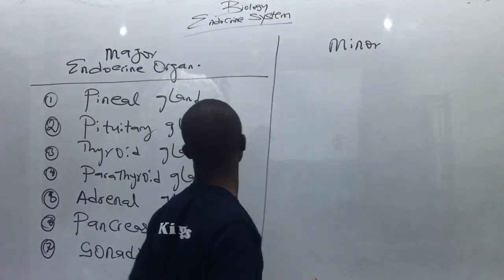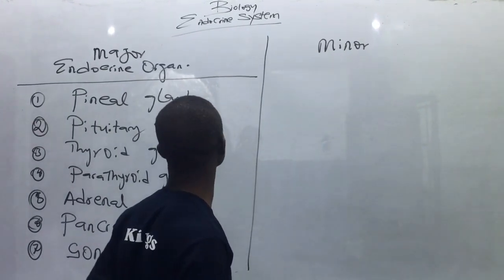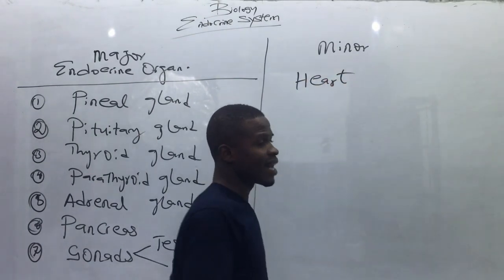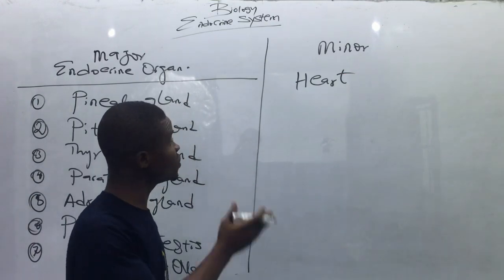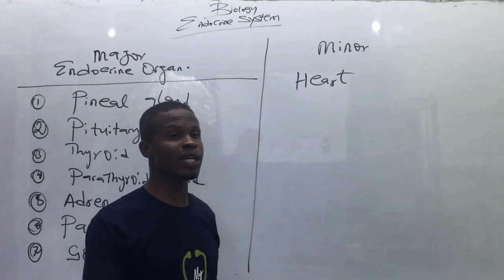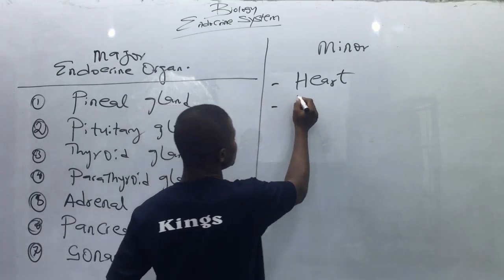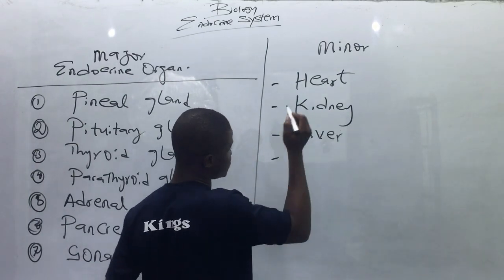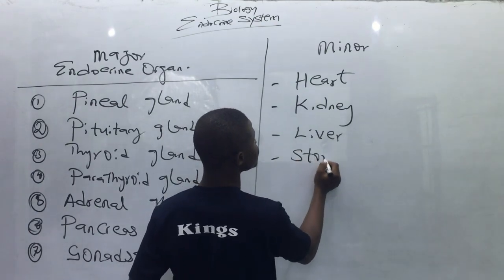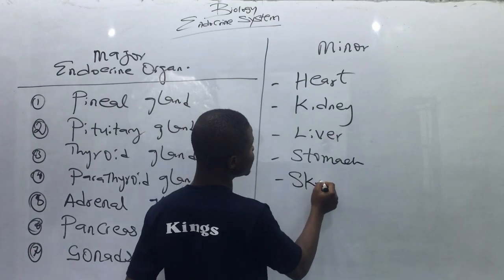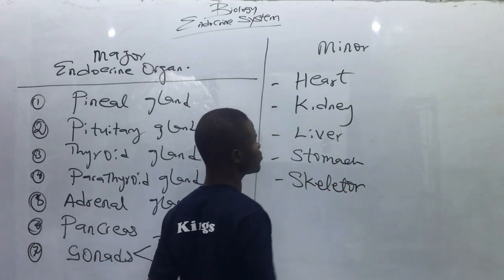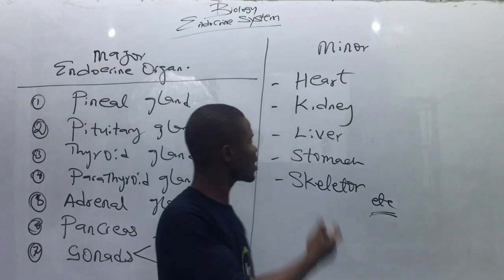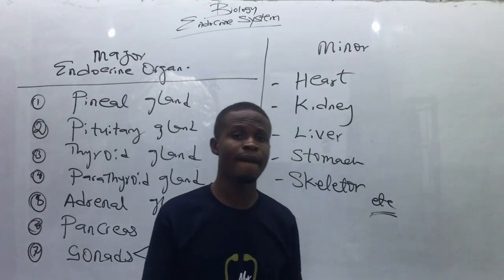The minor endocrine organs include: the heart — which has a secondary endocrine function, and when we reach there we will explain why the heart is an endocrine organ; the kidney; the liver; the stomach; and the skeleton.